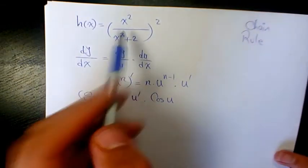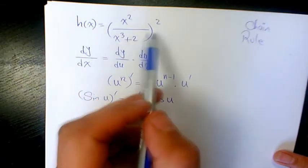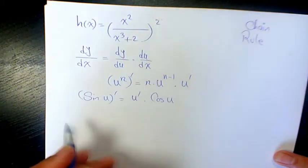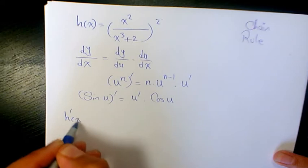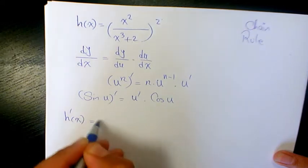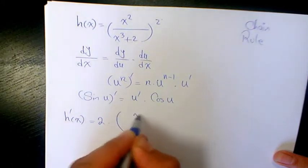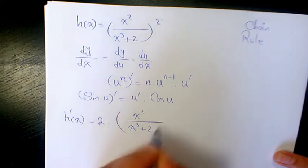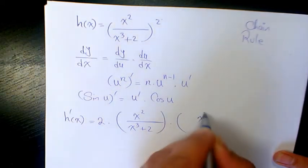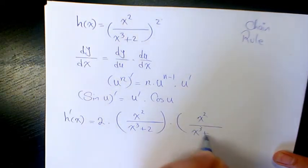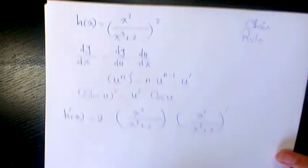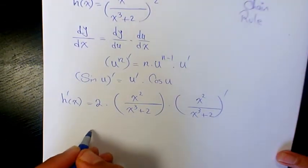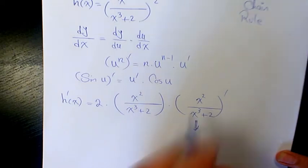So let's go back to this question. We have x squared over x cubed plus 2, to the power of 2. So h prime of x is going to be 2 times x squared over x cubed plus 2, times the derivative of x squared over x cubed plus 2. Let's find out the derivative of this part.